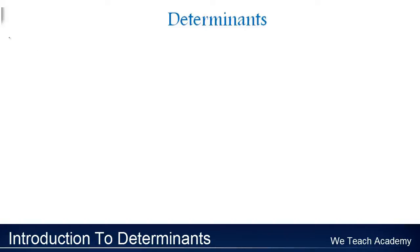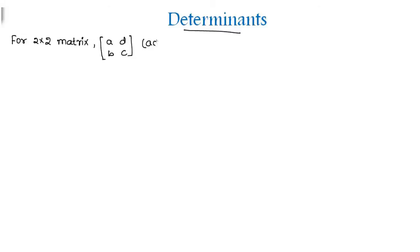So in our previous videos we already discussed for 2 by 2 matrices which is in the form of ABCD, the determinant value is AD minus BC. And now in this section we are going to deal with the matrices which is in the order 3 by 3.